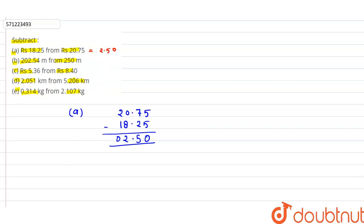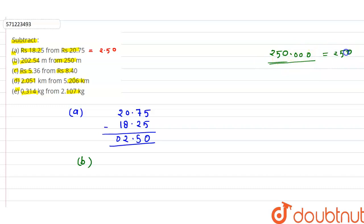For part B, we have to subtract 202.54 from 250. Whenever we have a whole number like 250, we can write it as 250.00 — adding decimal zeros has no effect on the value. So we write 250.00 and subtract 202.54.